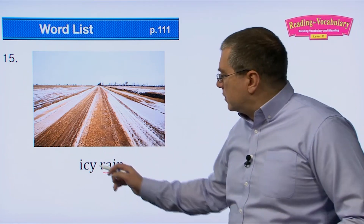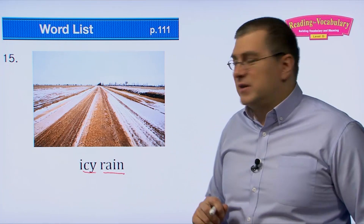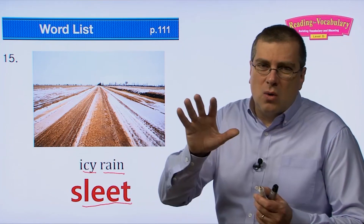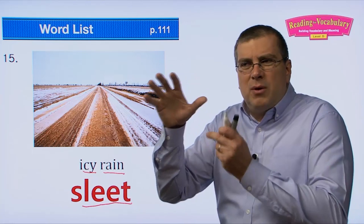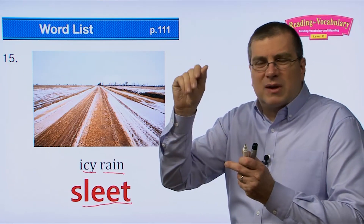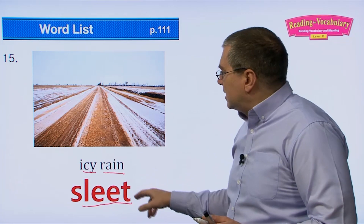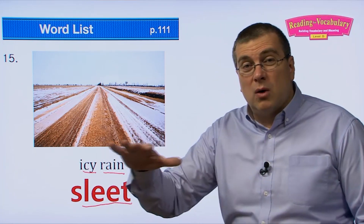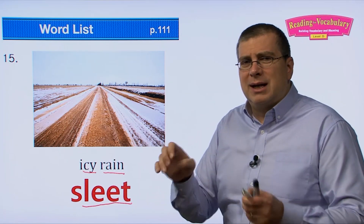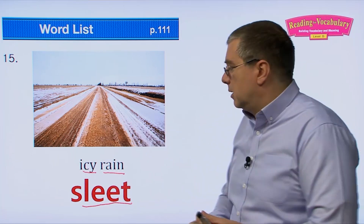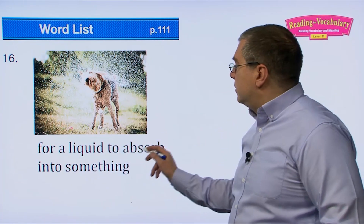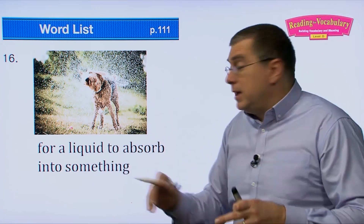Number fifteen: sleet. I see rain, but it's really cold so it becomes icy — almost freezing. Sleet is not snow and not rain, but a combination — icy rain. Sleet is dangerous because ice is slippery, so you have to be very careful on the roads and even when walking.